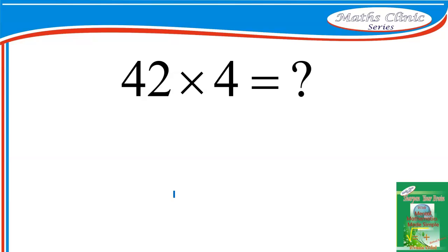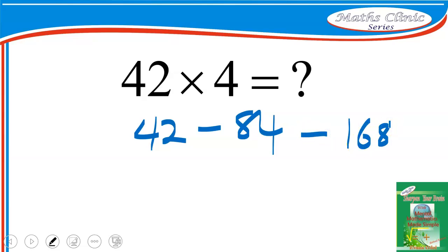All you need to do is to double the number and double it again. What I mean is that if you have 42 and you want to multiply it by 4, you double 42 - means you add 42 to itself and that will give you 84. Then you double the 84 and that will give you 168. What it means is that...